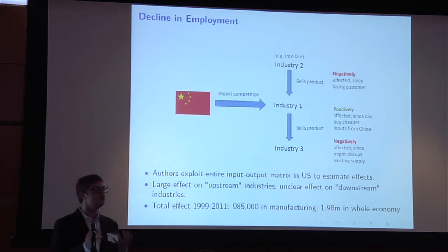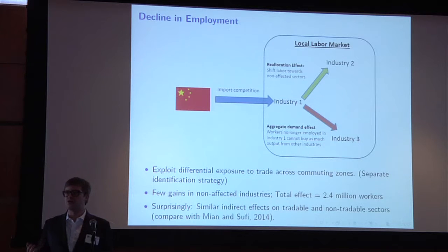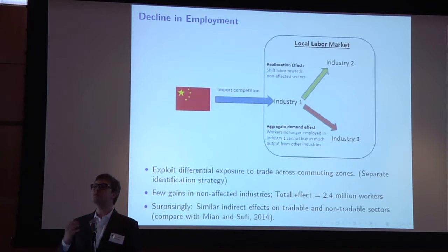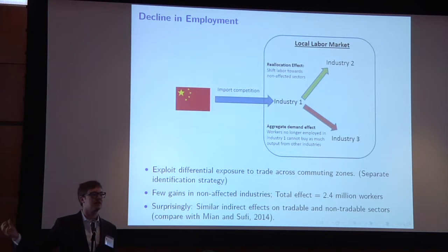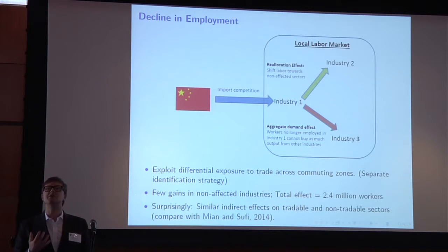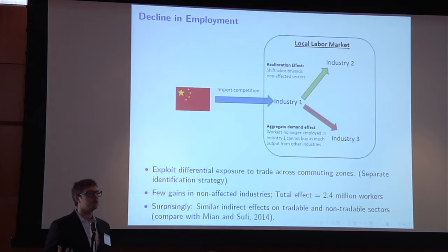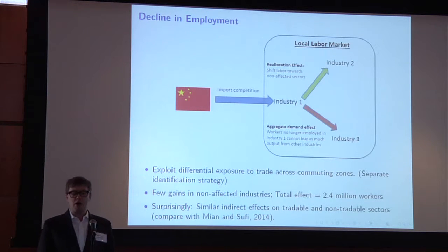The third specification looks at local labor markets: if a US manufacturing plant closes down in a particular commuting zone, that has at least two other ways it would affect employment. First is a positive reallocation effect — those workers previously employed might be hired cheaply in other sectors. Second is the aggregate demand effect — unemployed workers buy fewer goods, leading to a decline in demand for many other firms, both in manufacturing and services. When the authors do the empirical work here, they arrive at a total employment effect of about 2.4 million workers. One surprising finding is that you see very similar effects for tradable and non-tradable sectors within these commuting zones.